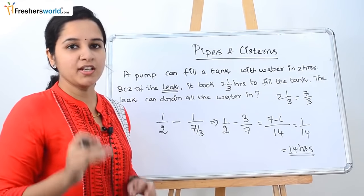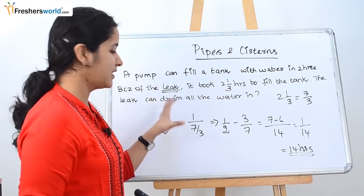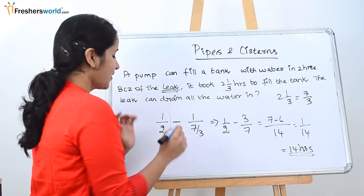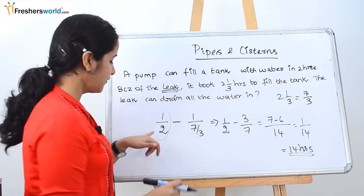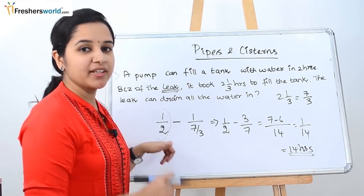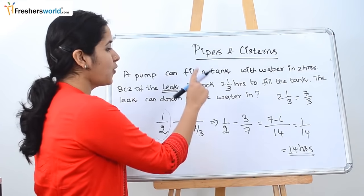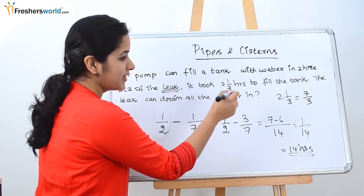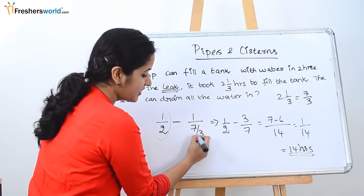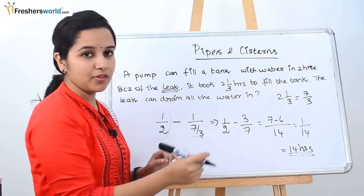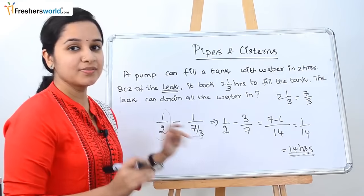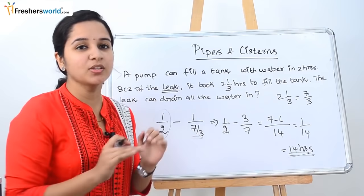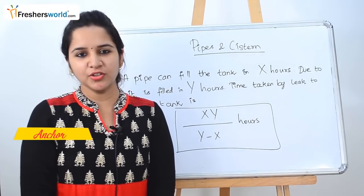It takes 14 hours for the leakage to completely empty all the water in the reservoir. So we wrote the pump rate as 1/2, and the net fill rate with leakage as 3/7. Subtracting gives 1/14, meaning the leak takes 14 hours to drain the tank. This covers the basic concepts from part 1.